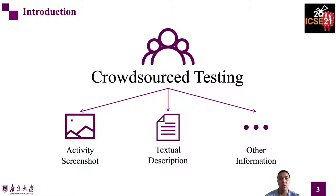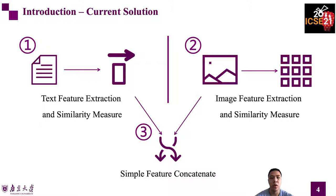Crowdsource testing is increasingly dominant in mobile app testing, but it is a great burden for app developers to inspect the incredible number of test reports. In this testing paradigm, crowd workers are required to submit textual descriptions of the bugs they found and attach an activity screenshot of the bug occurrence as proof. Other structured information will also be collected automatically. Among recent research, test report processing is always divided into two parts: app screenshots and textual descriptions.